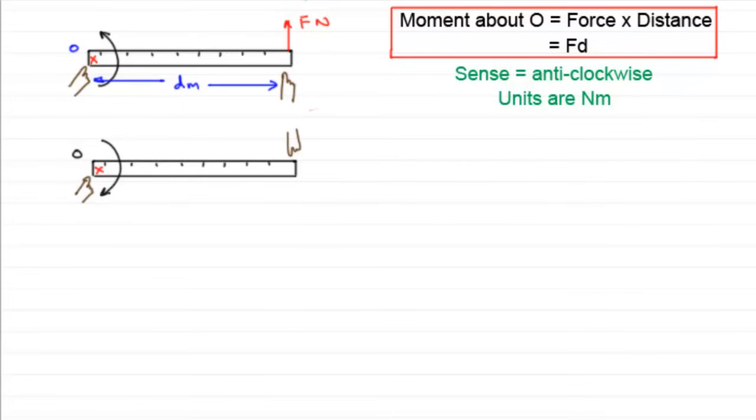And suppose the force that I push down here is 20 newtons. And the distance, the length of this ruler from this point here to here, is a 30 centimeter ruler. In other words, 0.3 meters. Let's just mark that distance in there.